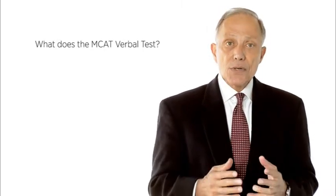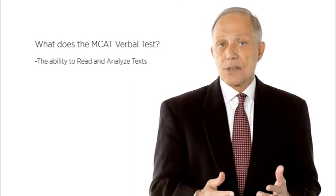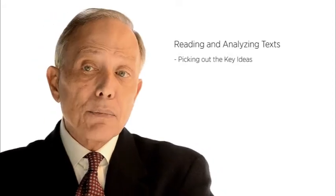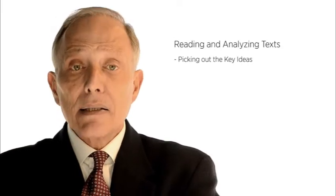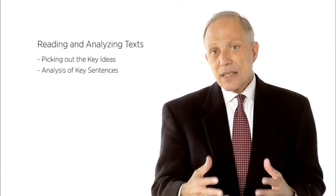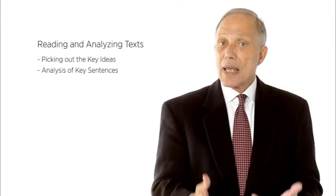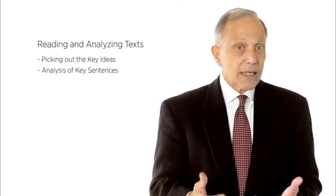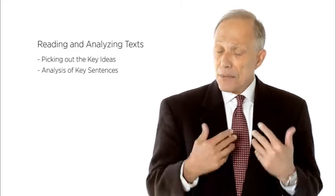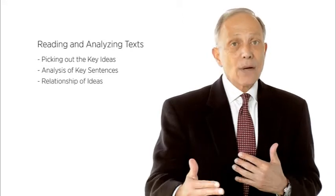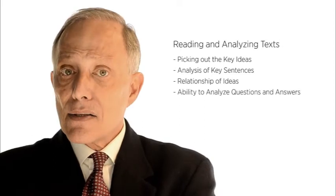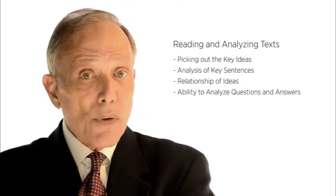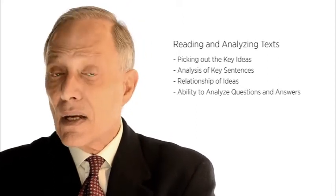The MCAT Verbal measures your ability to read and analyze texts. What does that entail? The first thing is being able to pick out the key ideas — the underlying structure of the essay as opposed to just intervening information. The second is to take those key sentences and analyze them internally, getting the complete meaning out of them. The third is to see the relationship of ideas, because the whole is always greater than the sum of its parts. And finally, it's the ability to analyze questions and answers with clarity and certainty — to see what the strategy of a question is and carefully distinguish between the answer choices.